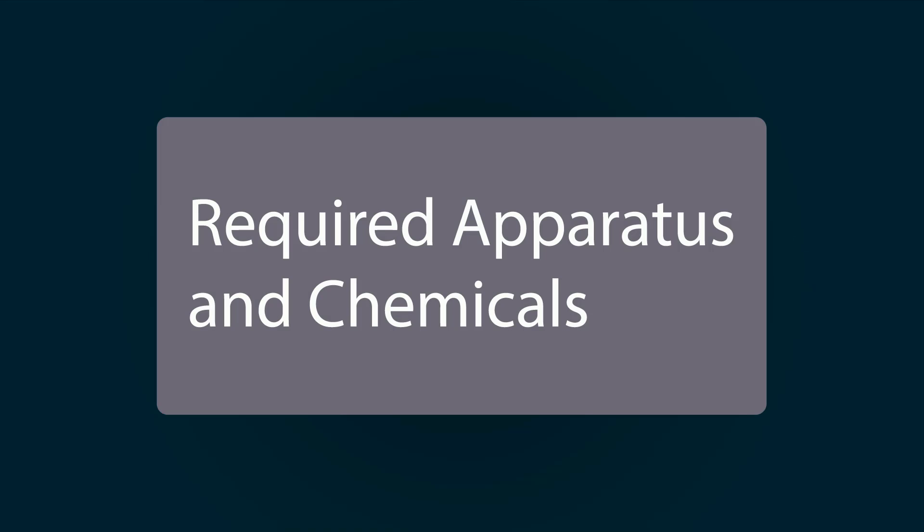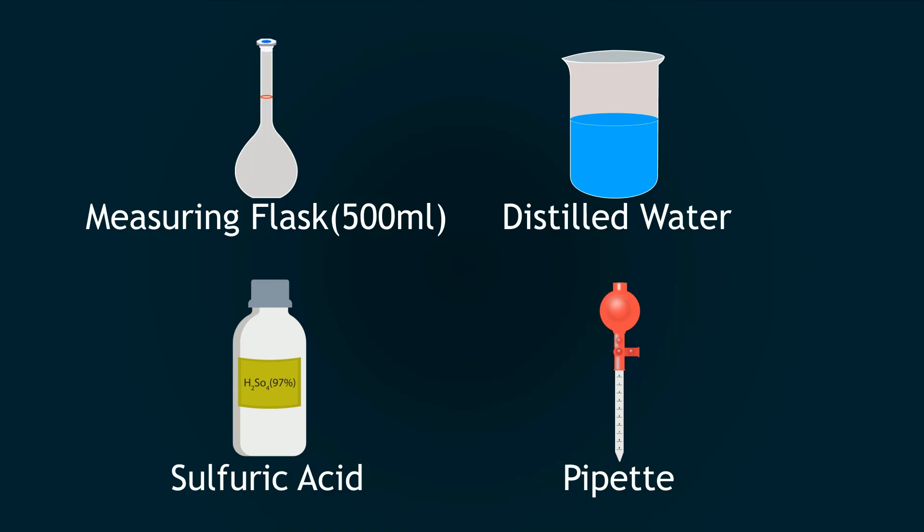The required apparatus and chemicals include a measuring flask of 500 milliliters, distilled water in a beaker, sulfuric acid, and a pipette.